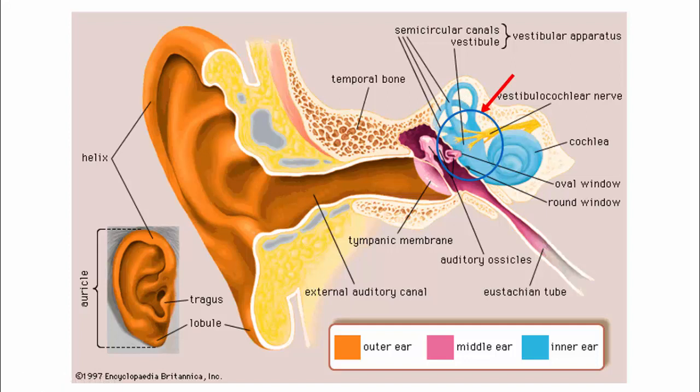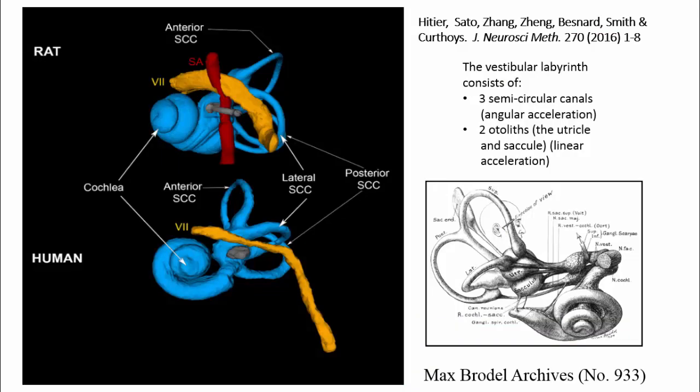There are also two otolithic systems related to the primitive statolith system that exists in jellyfish. In humans and mammalian species, these are the utricle and the saccule, which are a bit hard to see on this diagram.